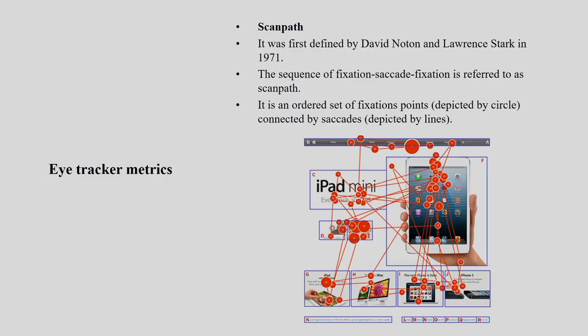Scan path — the name itself shows how your eyes are scanning the whole thing and drawing a particular path. It was described by Devin and Lawrence in 1971. The sequence of fixation, saccade, and fixation is referred to as the scan path. There is a fixation, then a saccade, then again a fixation — moving here, here, here, here — following the path of my fixations. That is called scan path.